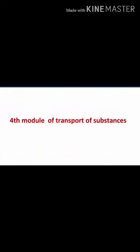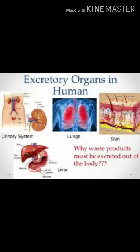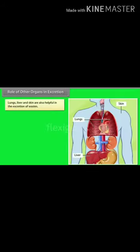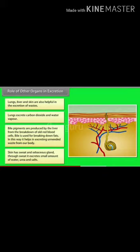In humans, the body excretes waste in the following ways: through exhaled air, through sweat, and through the kidney. The waste exhaled through the air — carbon dioxide formed after respiration — is sent out of the body with the exhaled air.